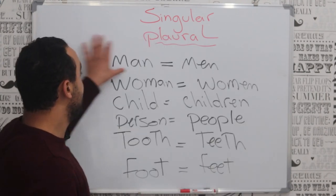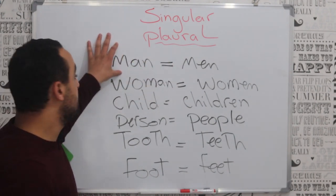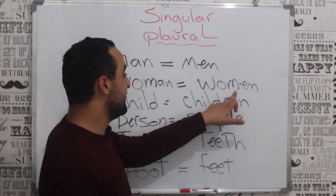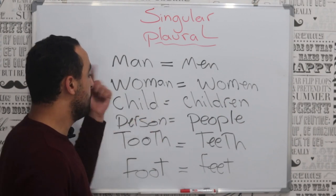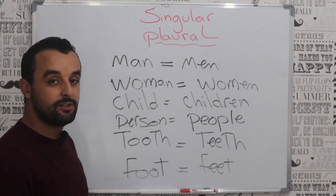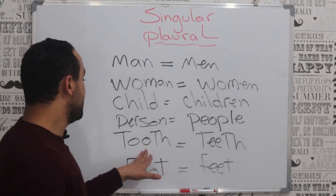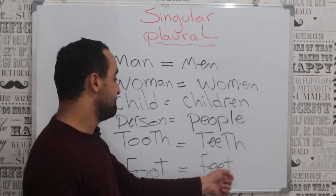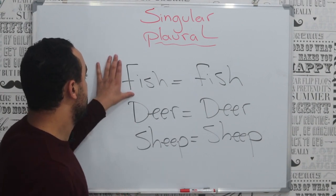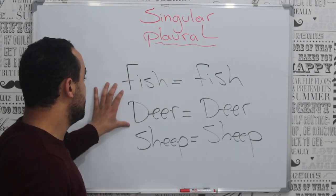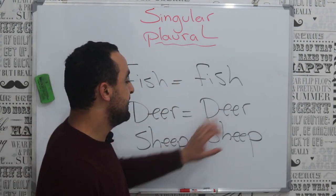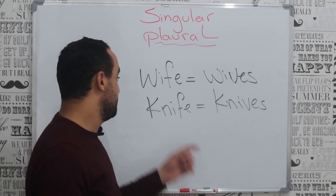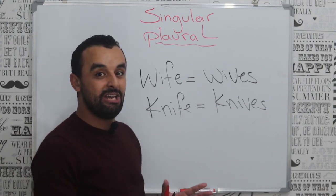Man in singular becomes men in plural. Woman becomes women. One child becomes two children. One person becomes people. One tooth becomes two teeth. One foot becomes two feet. These words change completely. Then we have words that don't change at all: fish stays fish, deer stays deer, sheep stays sheep. Also, wife becomes wives and knife becomes knives.